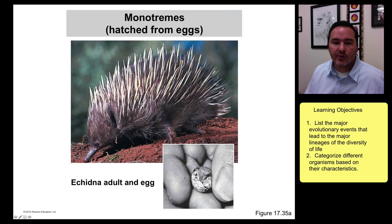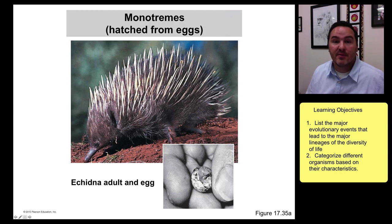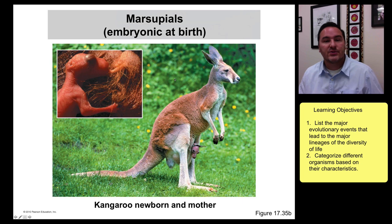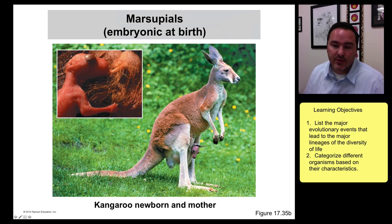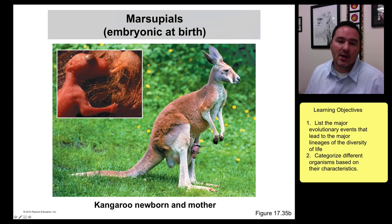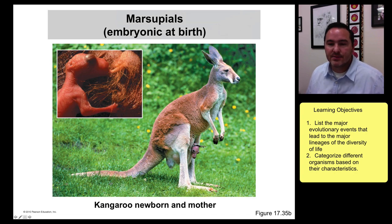Monotremes are mammals that are still hatched from an egg — here is an echidna egg, and the other example is the platypus. Marsupials are embryonic at birth — not hatched from an egg — but so small that they must climb up into the pouch and latch onto a teat, continuing to grow until they're large enough to fend for themselves.